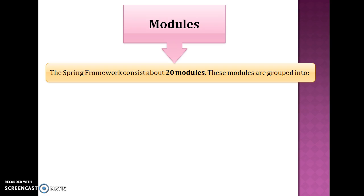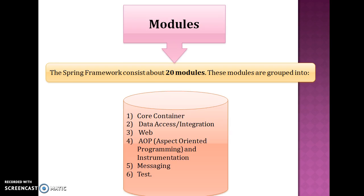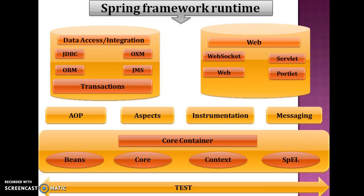Spring provides 20 modules. These modules are grouped into core container, data access, integration module, web, AOP (aspect oriented programming), instrumentation, messaging, and test modules. Every category contains some set of modules. These modules come into the picture at runtime when you run your application.